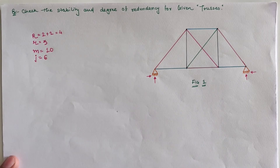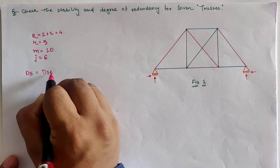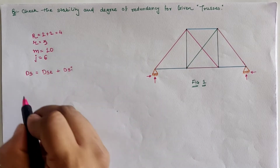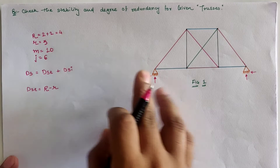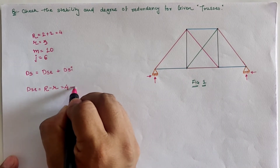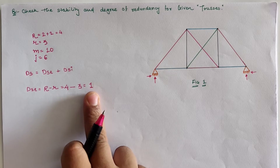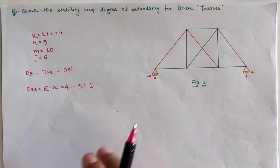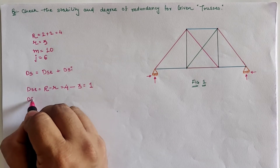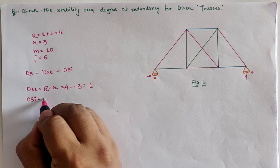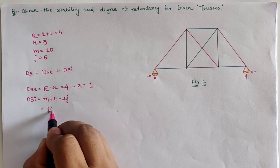The degree of static indeterminacy is calculated as DSI = DSE (external stability) + DSI (internal stability). DSE is calculated by the equation capital R minus small r, so with R = 4 and r = 3, DSE = 1. This value of 1 indicates we have to select 1 redundant reaction — one that is in excess of the 3 equilibrium conditions. Similarly, DSI for a plane truss uses the equation m + r minus 2j.